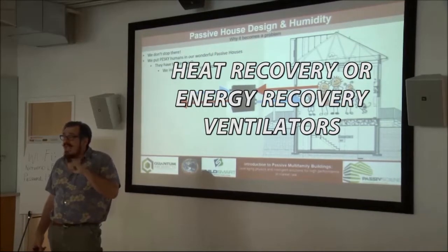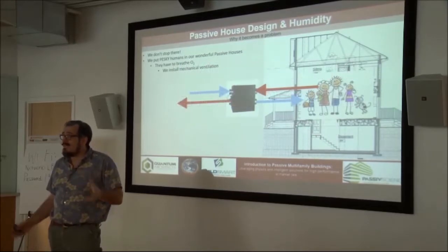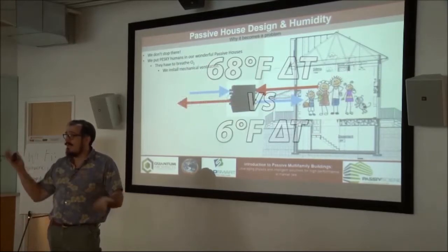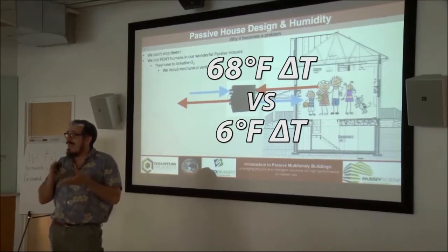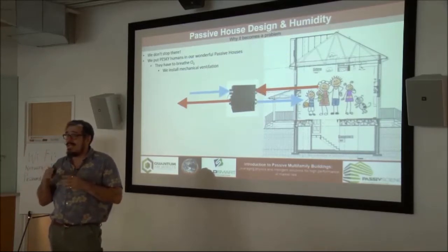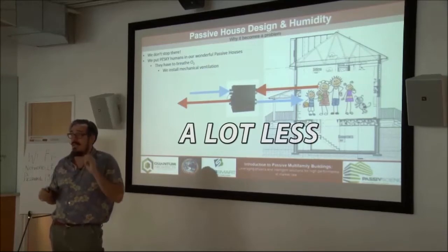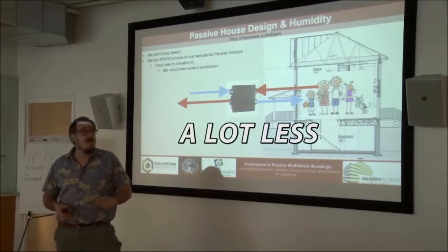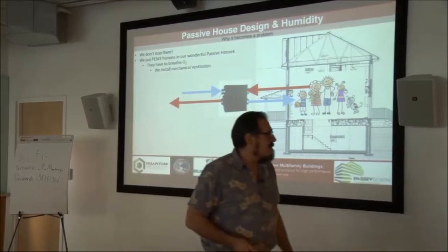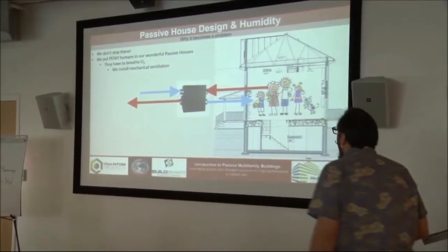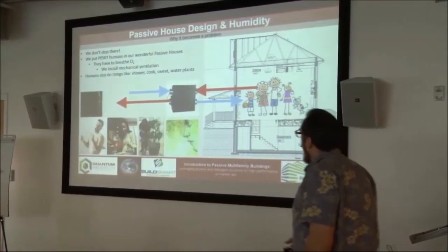That air will come in at about 62 degrees. So instead of a delta-T — a difference in temperature — of 68 degrees, you've got only 6 degrees. The amount of energy it takes to heat air from 62 to 68 is a lot less than from zero to 68. So these devices are bringing in fresh air, but they also bring in moisture.